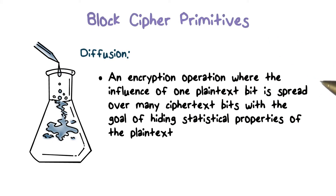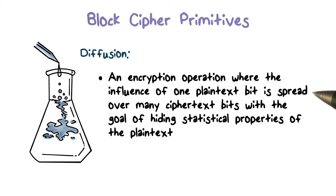Diffusion means that the influence of one plain text bit is spread over many bits in the ciphertext, and the goal is to hide the statistical properties of the plaintext.